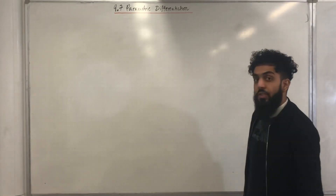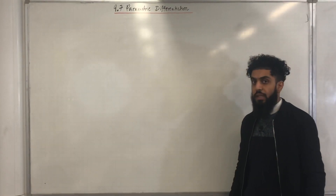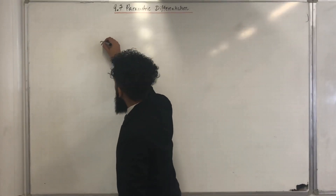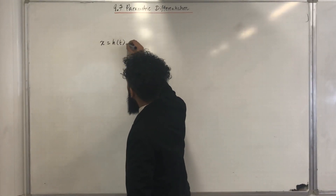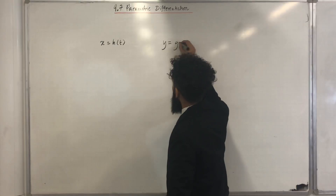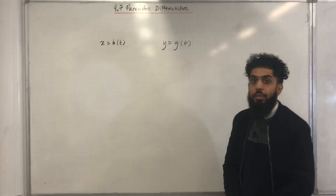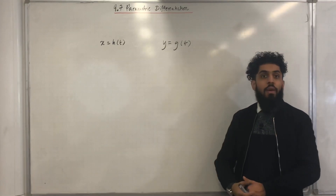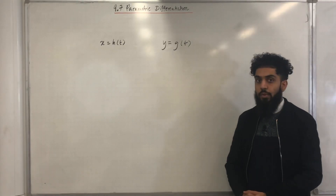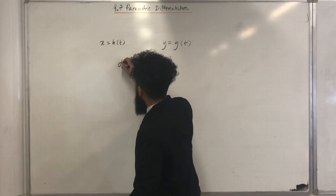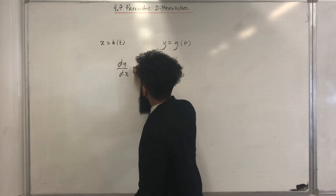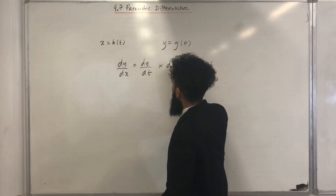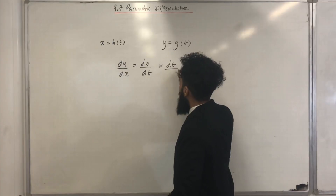Let's start off with the parametric equations x equal h of t, y equal g of t. In the exam you could be asked to work out dy over dx. Now dy over dx is given by the chain rule: dy over dx is equal to dy over dt multiplied by dt over dx.